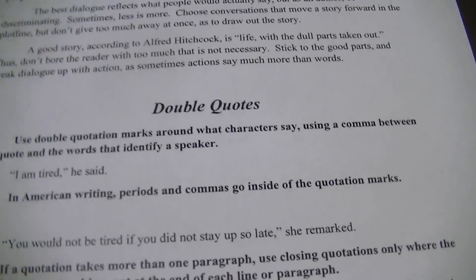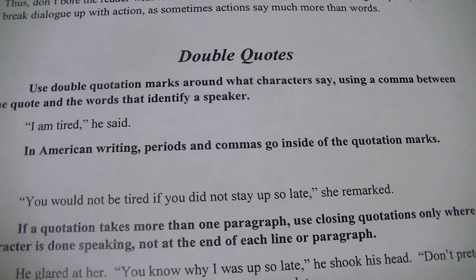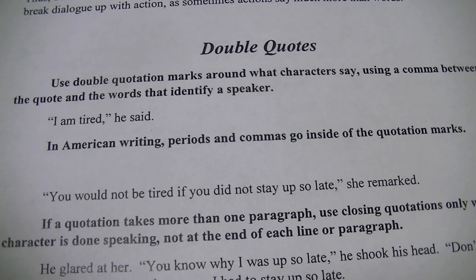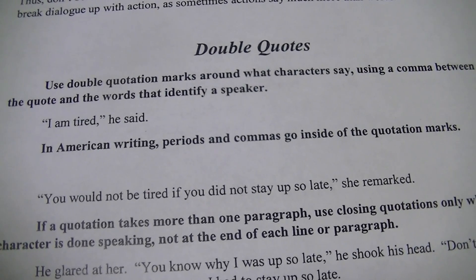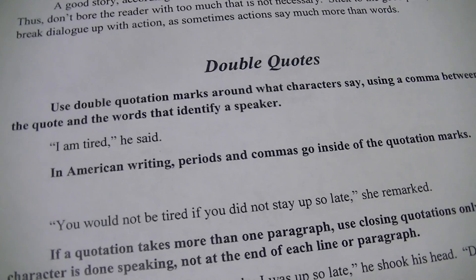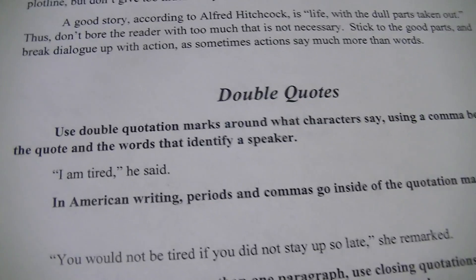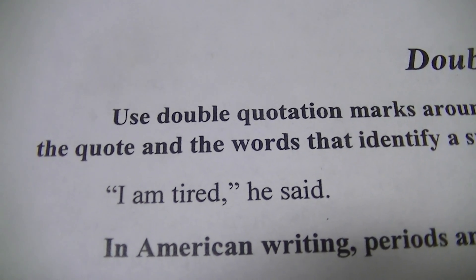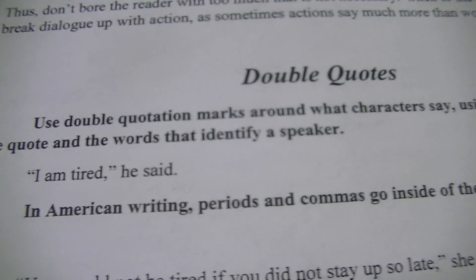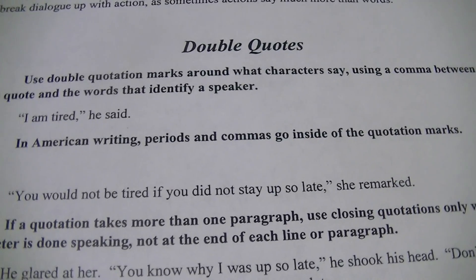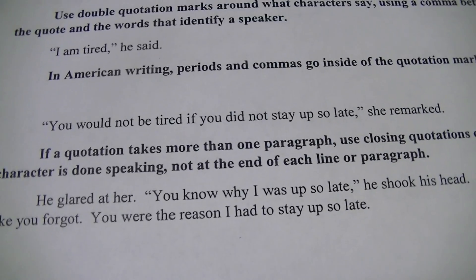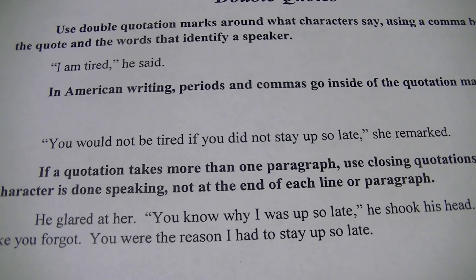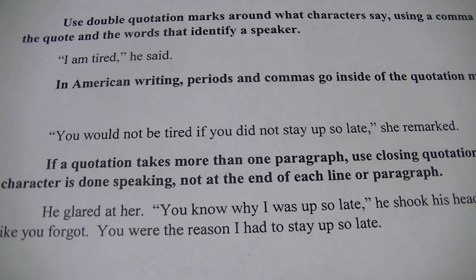Double quotes — people love to confuse these. Double quotes are usually around what people say. There's usually a comma between the quote and where they start speaking. So in the first example, it says: "I am tired," he said. Notice the comma is inside of those double quotes. In American writing, commas go inside of the quotation marks. See another example: "You would not be tired if you did not stay up so late," she remarked. Again, notice the comma is inside of the double quote marks.